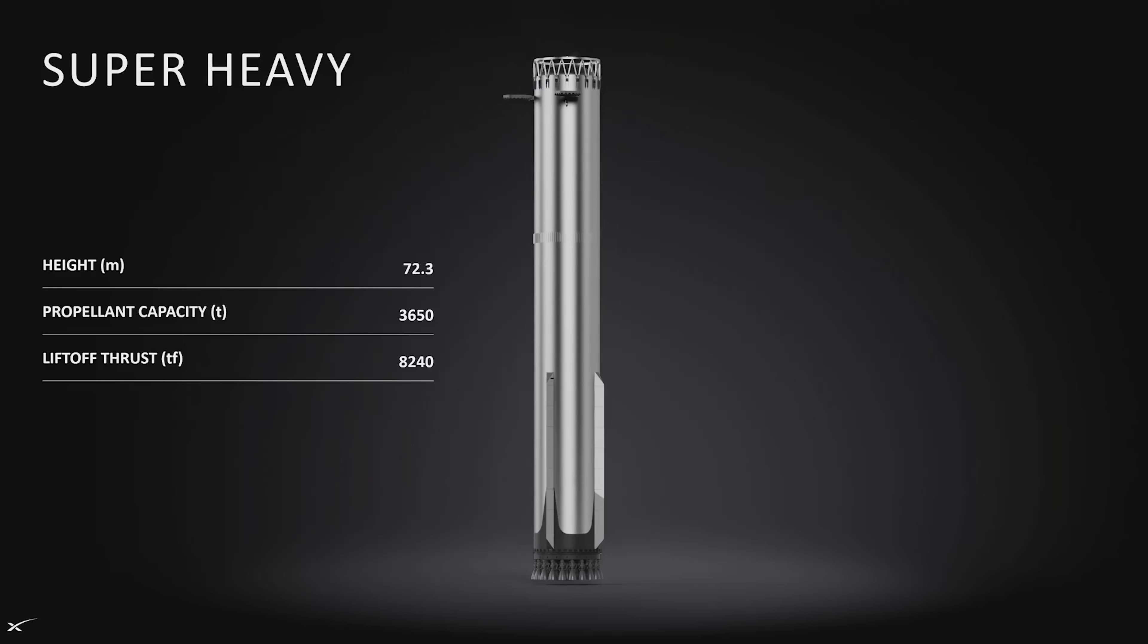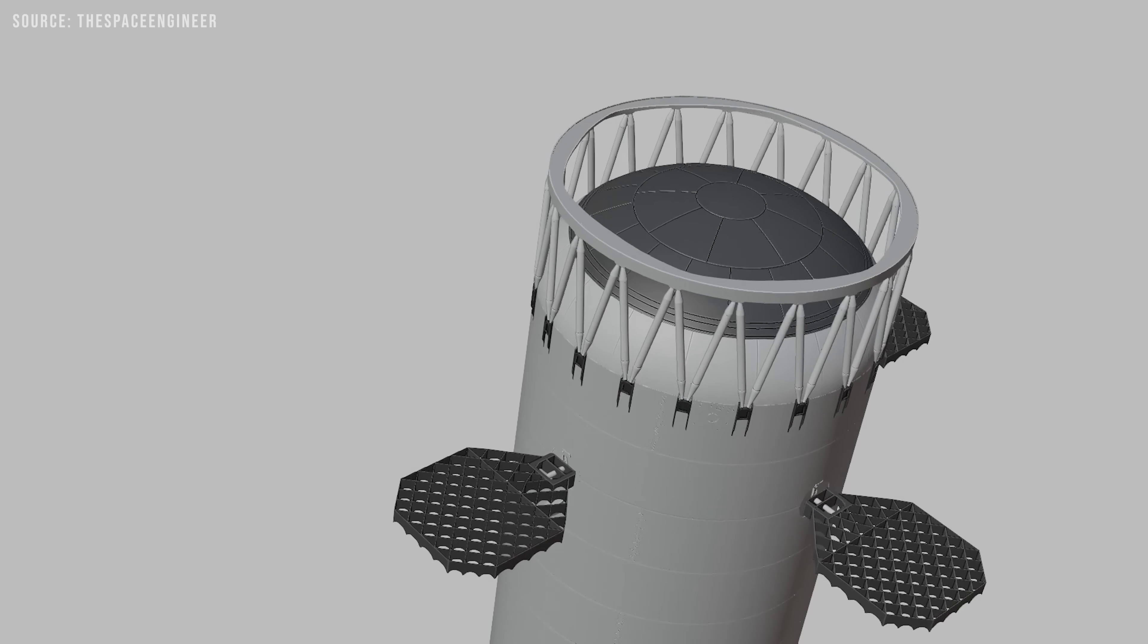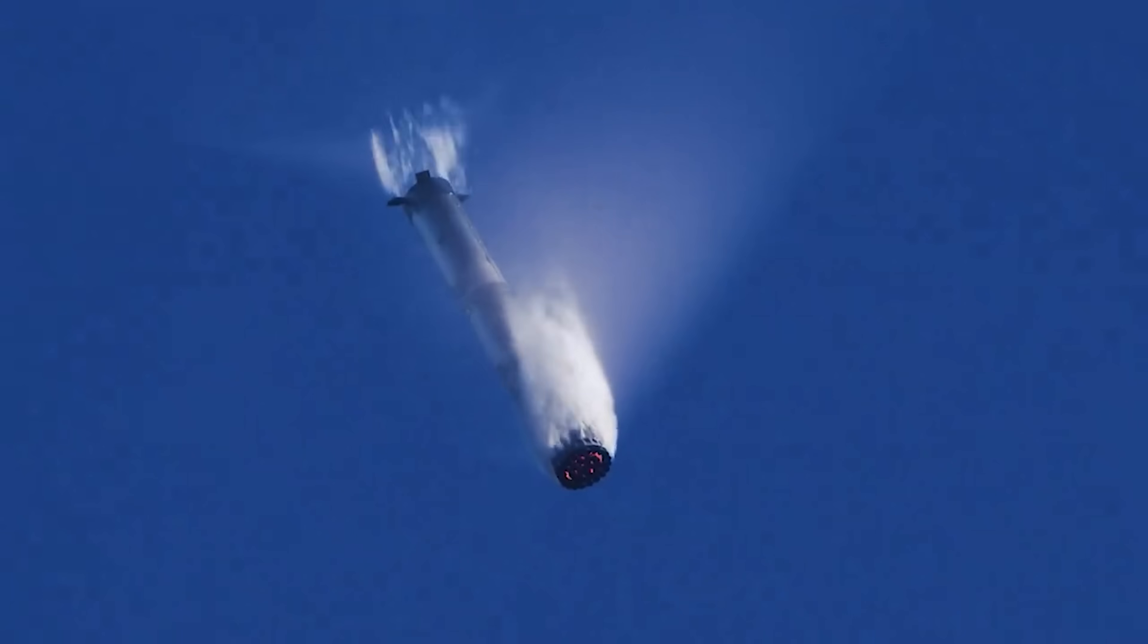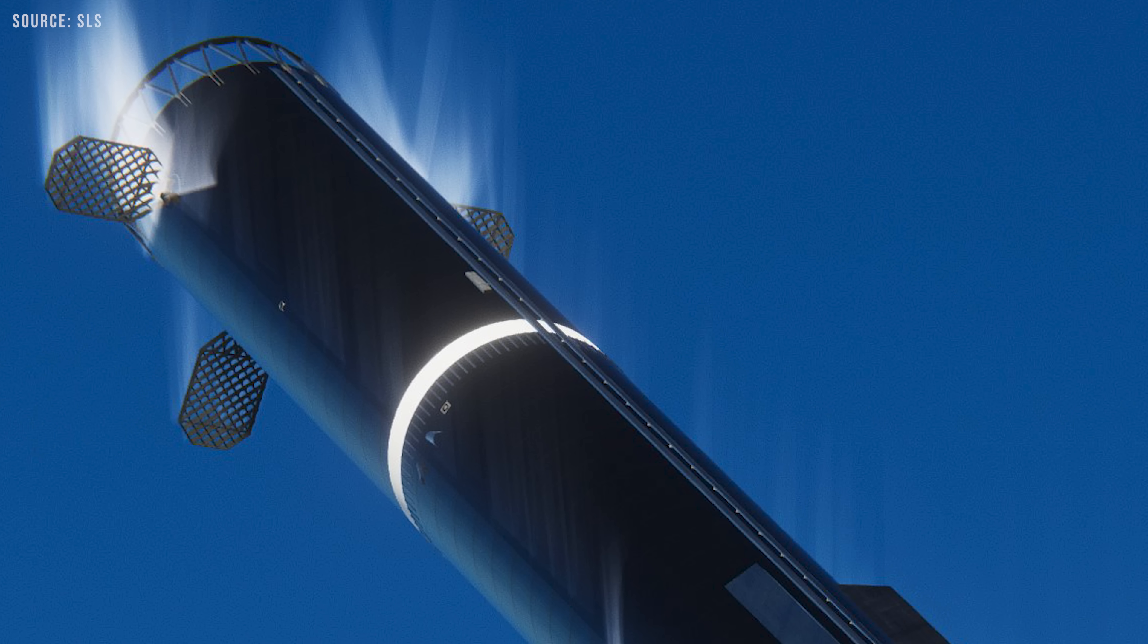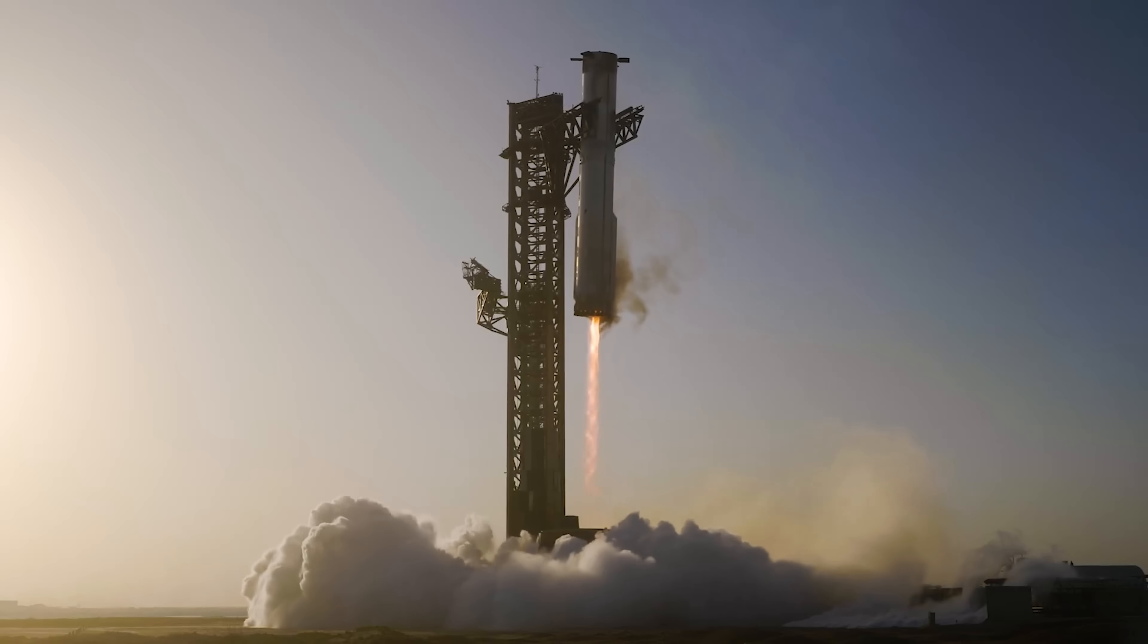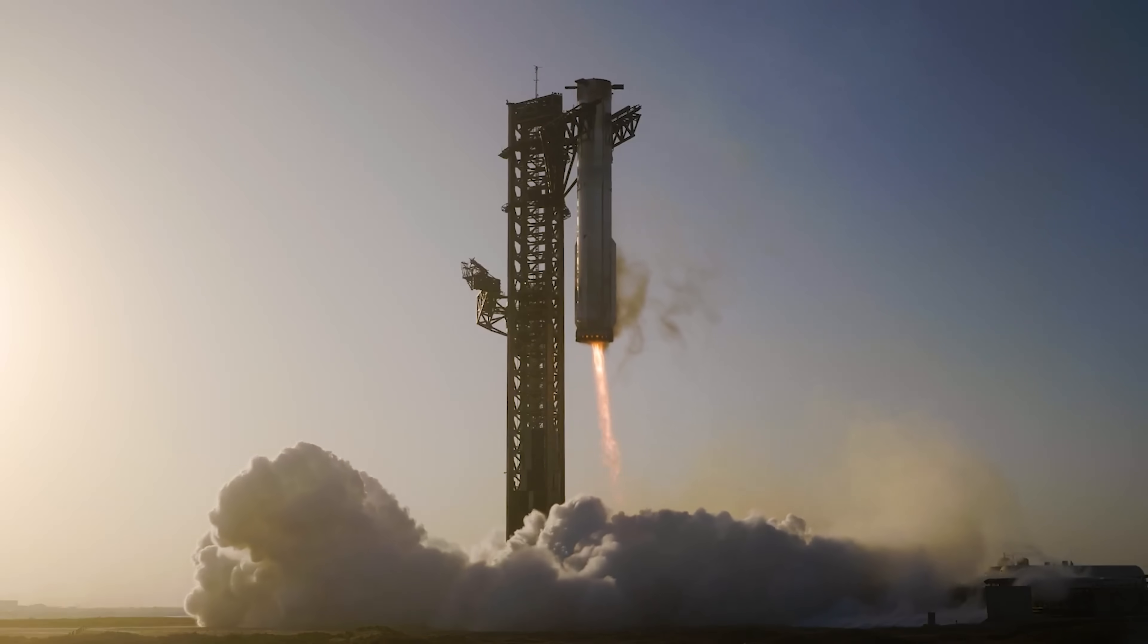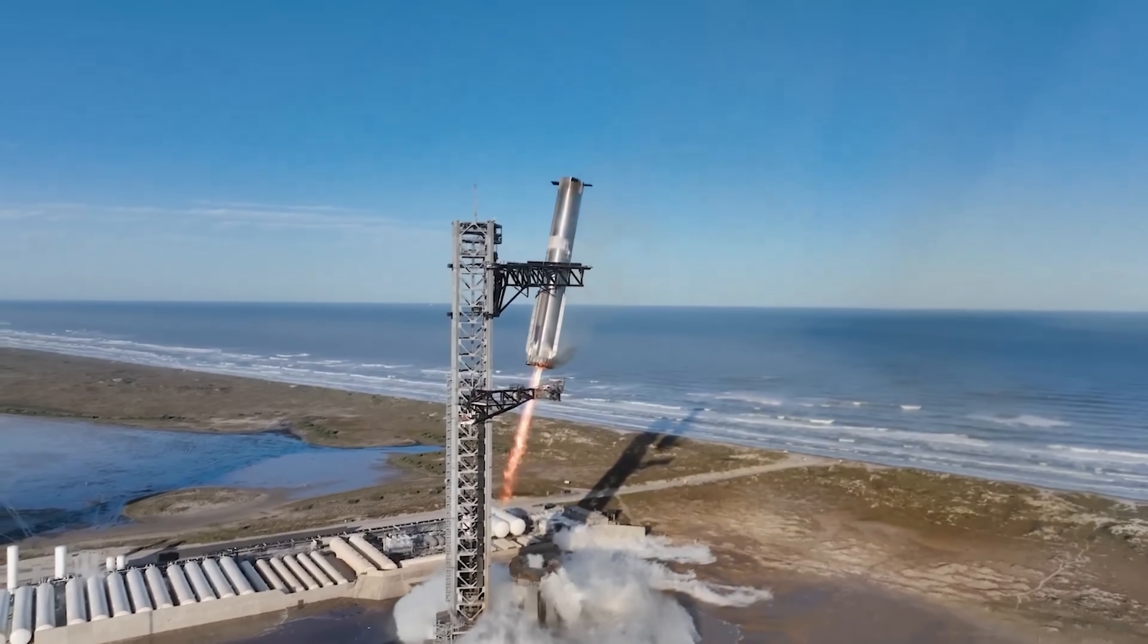Another visible change is the booster's reduced number of grid fins. Instead of four, the new design features just three. Grid fins are essential for precision landing control, as seen on both Starship and Falcon 9. The switch to an asymmetric three-fin configuration likely reflects performance optimizations, suggesting the fourth fin was unnecessary. This reduces weight. But it remains to be seen how the new layout will perform in practice, especially given the proven success of the four-fin setup.